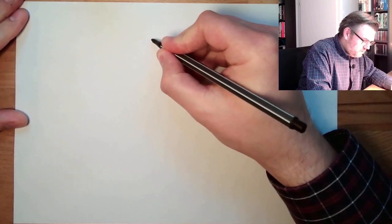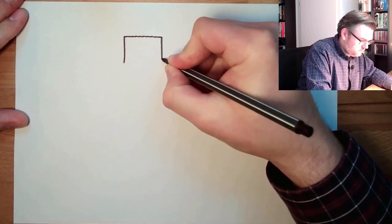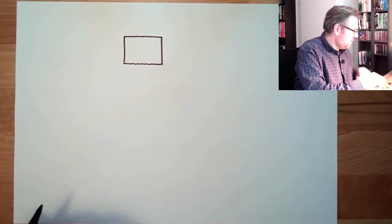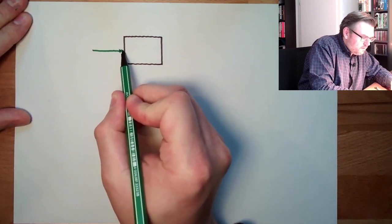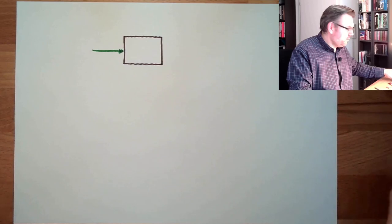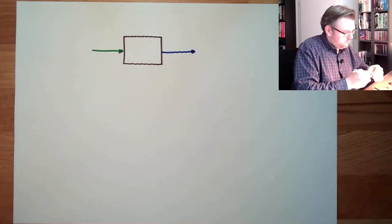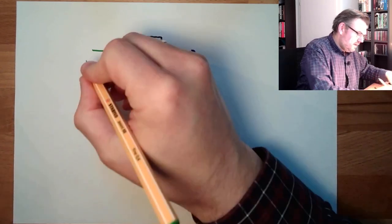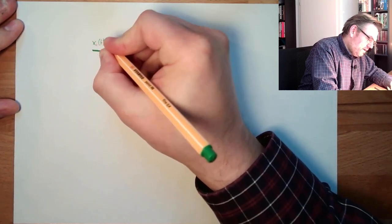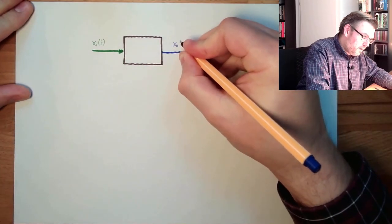Let's draw this. So there is our system. Then we have our input xi and we have the output xo — xi, variant in time of course, and that's our resulting output xo from t.